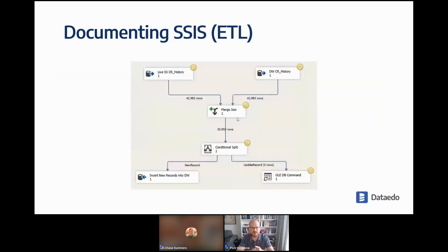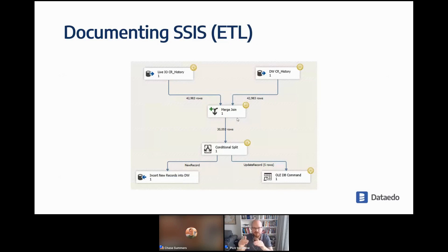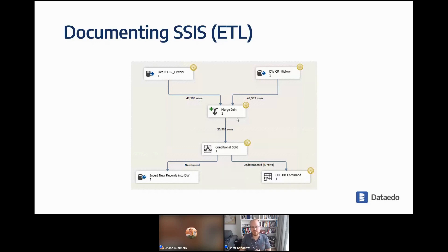Another ETL we've added is SSIS — one of the most popular, though quite old, ETL tools from SQL Server. We help you import packages, which are imported into the procedures folder. Every data flow task has its own processor in our data lineage tab. If we can find the sources and destinations based on the connection information, we will create the flow automatically. In the best case scenario, you add SSIS and it will create the lineage for you, explaining how your data warehouse is being loaded.